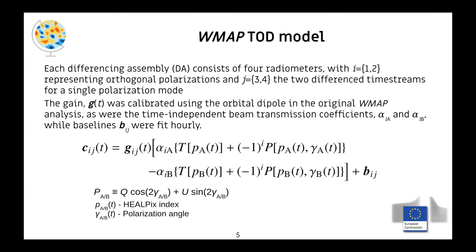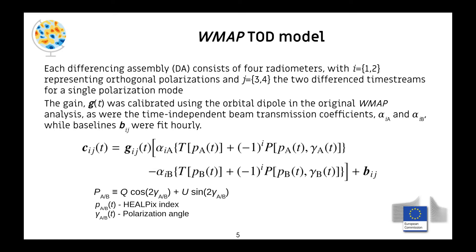If one horn has a slightly higher gain than the other, this could induce a spurious signal. In fact, this is the source of the largest remaining large-scale polarized signal in WMAP.